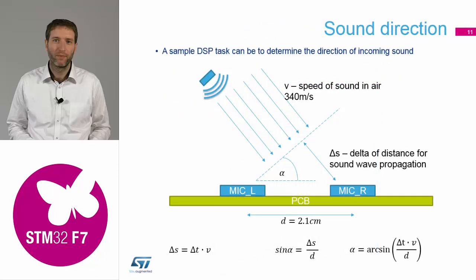So what we can do with such signals is a very simple processing called correlation, which we can use for determining the direction of sound coming to the board. Physically, our board has two microphones with a distance of 2.1 centimeters. Since the speed of sound is finite—roughly 340 meters per second—we can determine the angle, the direction the sound is coming from, just by the delay between one microphone and another.